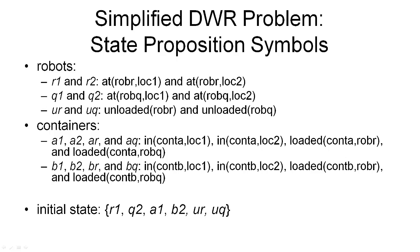Now let's look at the proposition symbols we will use to represent world states and actions. These symbols are very concise. For example, R1 denotes that robot R is at location one, and R2 means robot R is at location two — equivalent to the STRIPS "at(robot R, location 1)." Similarly, we have equivalent symbols for robot Q: Q1 means robot Q is at location one, and Q2 means robot Q is at location two. We also use UR to indicate robot R is unloaded, and UQ to indicate robot Q is unloaded — giving us six symbols total for the two robots.